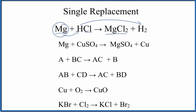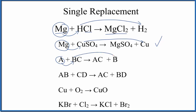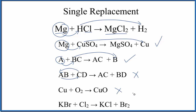Pause and see if you can identify the single displacement reactions. The first one is similar to our example — magnesium pushes the copper out, copper is by itself, magnesium is with the sulfate: magnesium sulfate. That's a single displacement reaction. The general form: A pushes B out, B is by itself, now A and C are together — single displacement. Here we have two things switching places, and since they're switching places, this isn't single displacement — this is actually a double displacement.